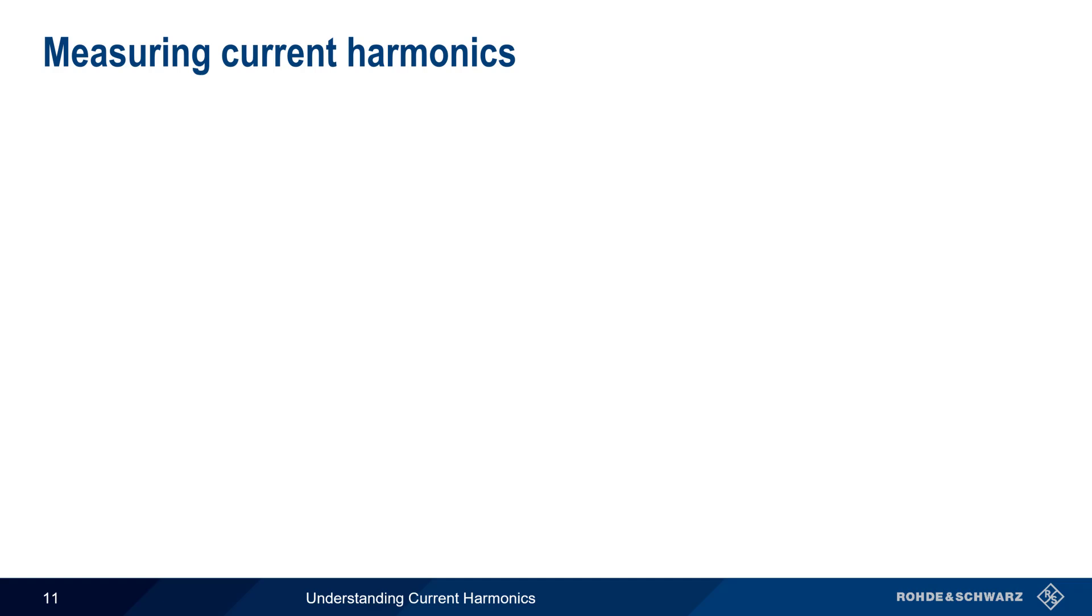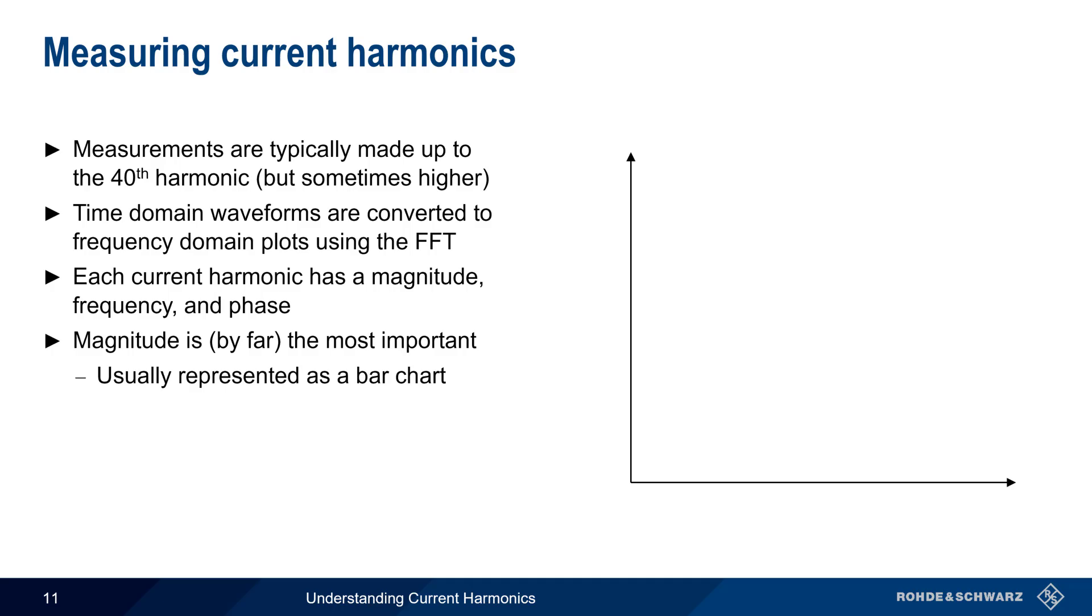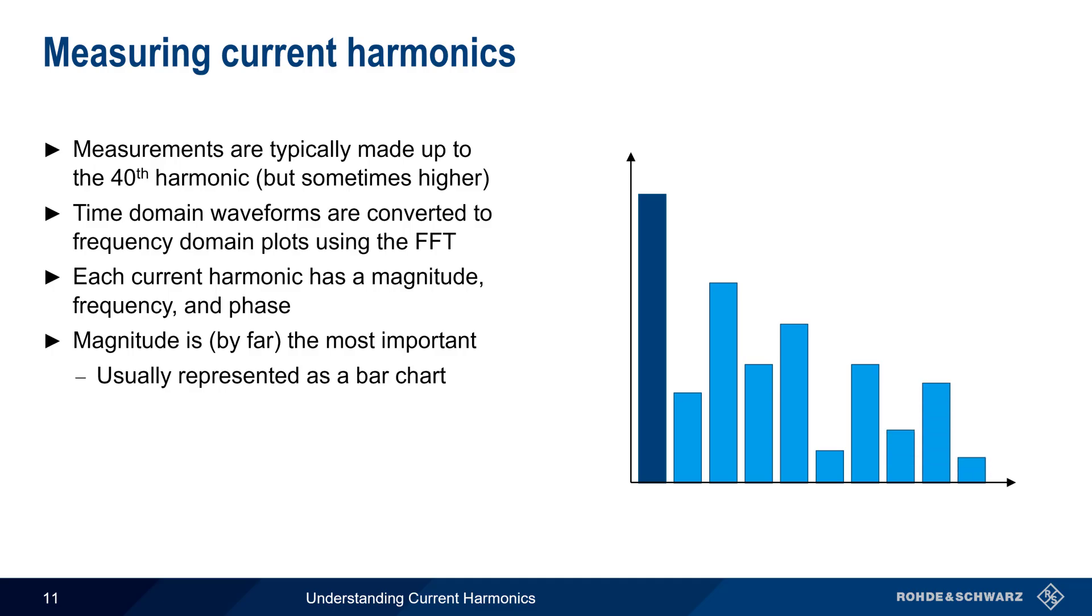Next, let's talk about how current harmonics are measured. Usually, measurements are made up to the 40th harmonic, and this is done by using the Fast Fourier Transform, or FFT, to convert the time domain current waveform into the frequency domain. Each current harmonic has its own magnitude, frequency, and phase. But of these, the magnitude of the harmonic is, by far, the most important. Magnitude is usually represented in the form of a bar chart, with the magnitude of the fundamental on the left, and the magnitudes of each subsequent harmonic to the right. These are often plotted relative to the magnitude of the fundamental, either in percent or in dB.